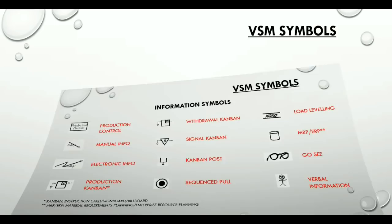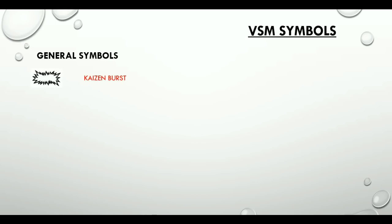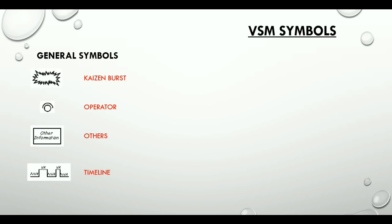The last category is general symbols. The Kaizen burst icon is used to highlight improvement needs and plan Kaizen workshops. The operator icon represents an operator and shows the number of operators required at any workstation. There is also an 'other' icon for other useful or potentially useful information. Finally, the timeline icon shows value-added time such as cycle time and non-value-added time such as wait time, and is used to calculate lead time and total cycle time.